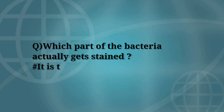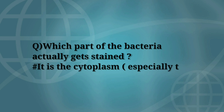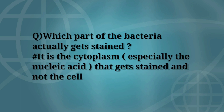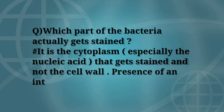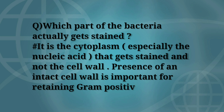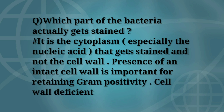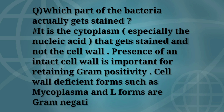Next: which part of the bacteria actually gets stained? Answer: It is the cytoplasm, especially the nucleic acid, that gets stained — not the cell wall. Presence of an intact cell wall is important for retaining gram positivity. Cell wall-deficient forms such as mycoplasma and L-forms are gram negative.